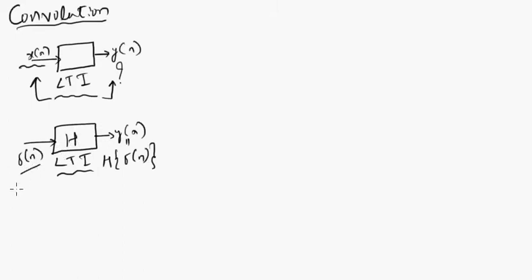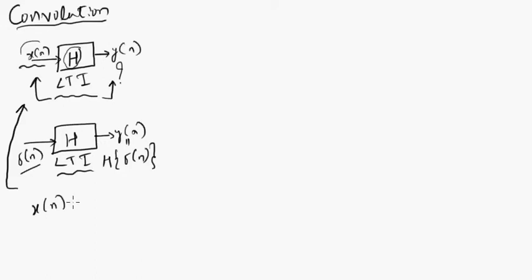Now we know how this system behaves with respect to the given impulse, which is the impulse response of the system. Coming back to the initial case — we know the impulse response, but we still do not know how this system behaves with respect to a given arbitrary input x[n]. To solve this: if we can write the input in terms of impulses, and having already known the impulse response h, we can determine its output. The next task is — how can we write the input in terms of impulses? That's very easy: take input x[n] and multiply it with an impulse — that's it.